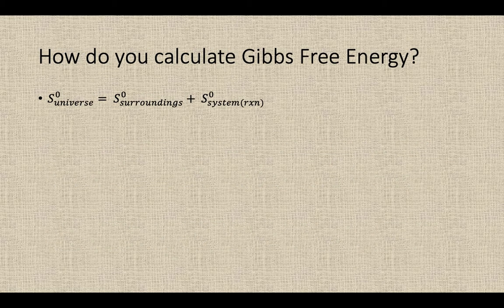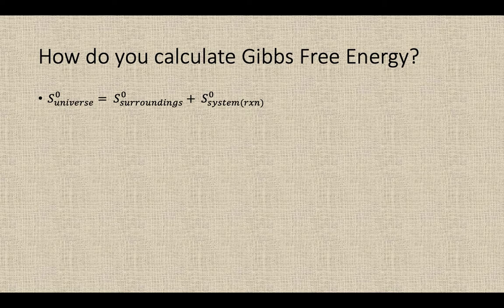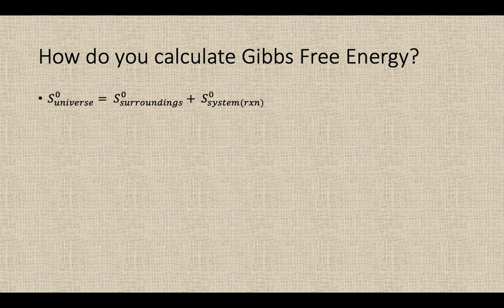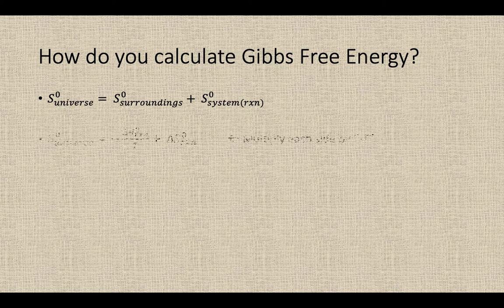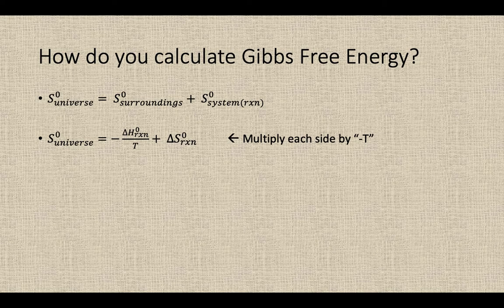So how do you calculate Gibbs free energy? We're going to take that equation that we looked at in a previous lesson, where the entropy of the universe is the sum of the entropy of the surroundings and the system, or the reaction. And we saw that to get the entropy of the surroundings, you would take the delta H of reaction, the enthalpy of the reaction, divide that by T, the temperature at which the reaction was taking place, and flip the sign on it in order to get the enthalpy changes that were occurring in the surroundings instead of the system.